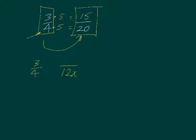In this case, it's 5. So if 4 times 5 equals 20, then we multiply the top number 3 by the same number 5 and we get 15. And therefore, 15 over 20 is an equivalent fraction to 3 over 4. And that's all there is to that.